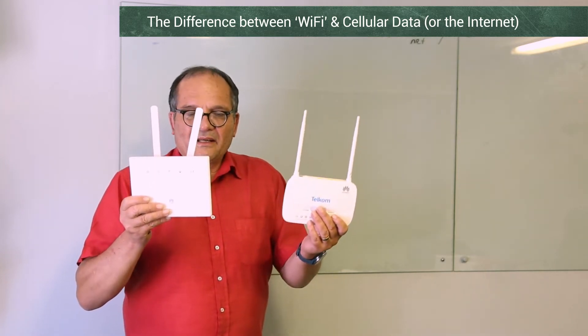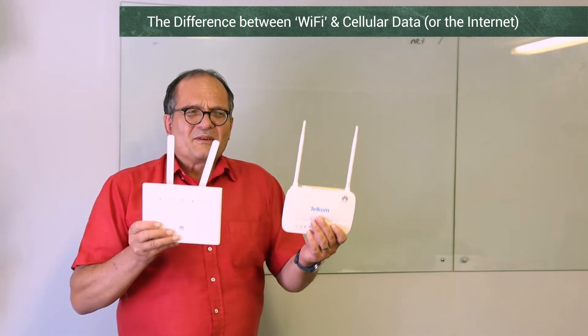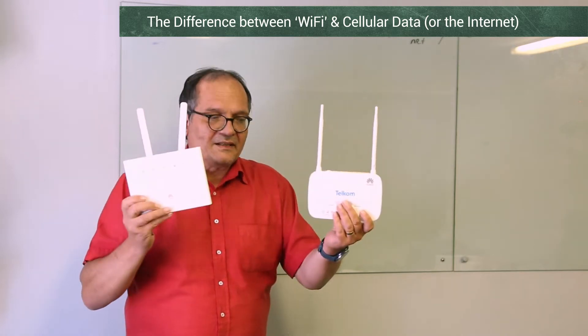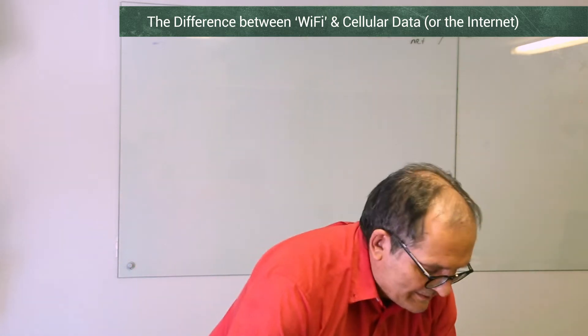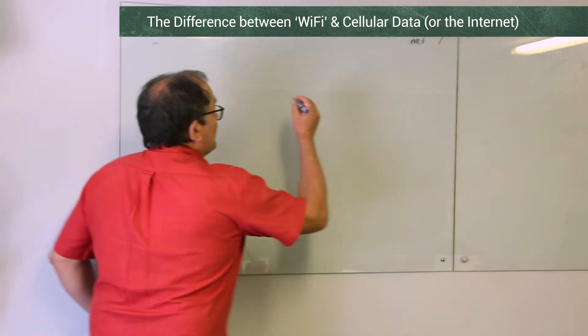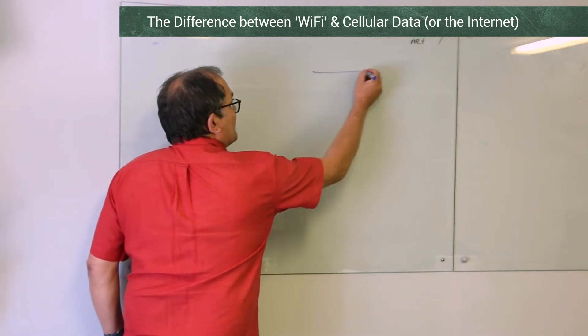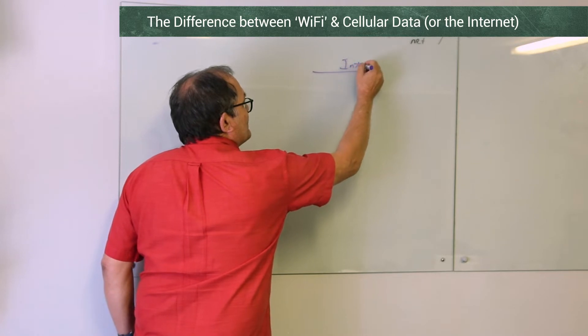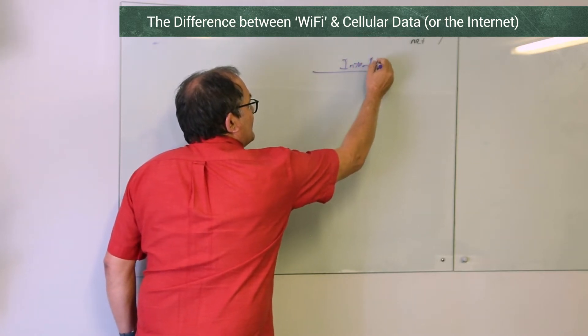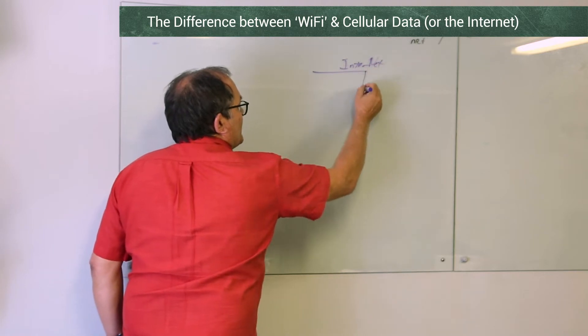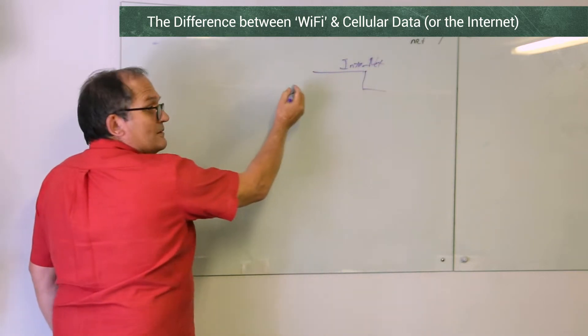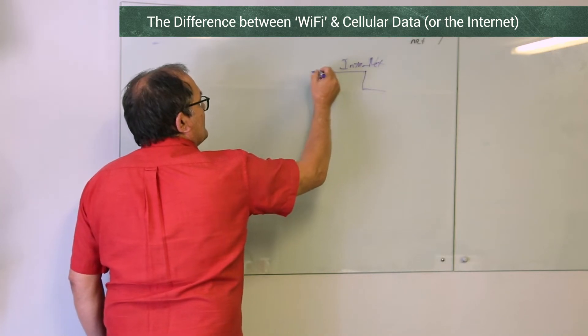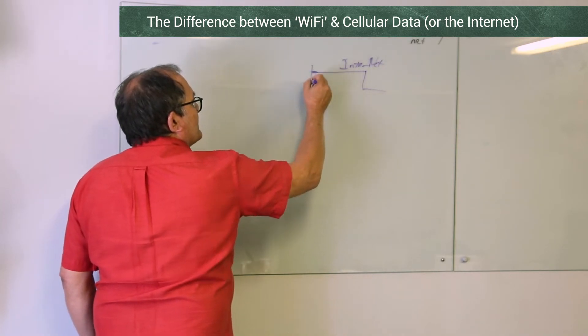People sort of wonder where's the internet coming from, what is happening, how can I tell which one is which? Let me start off with explaining the principle. At some point we've got the internet - in other words, we need internet - and I'll explain where that comes from.